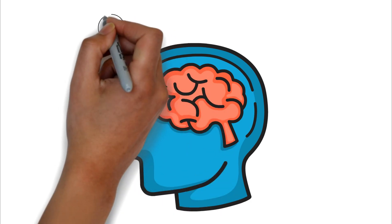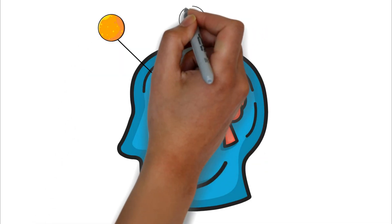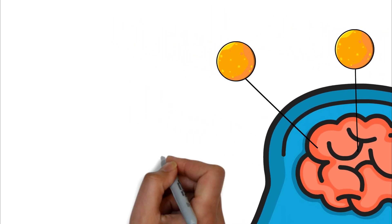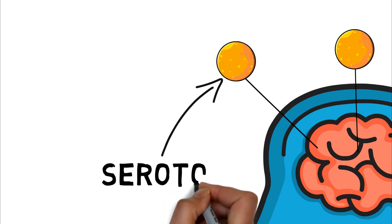The brain does lots of amazing things, including the production of chemicals that help regulate our body functions. This one right here, well, that's serotonin.